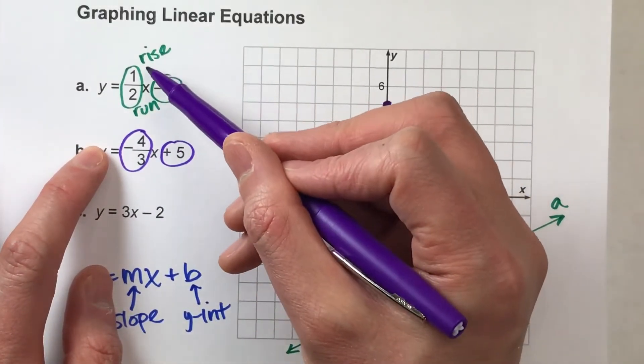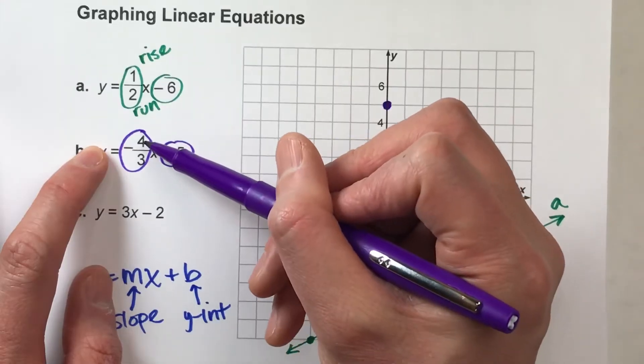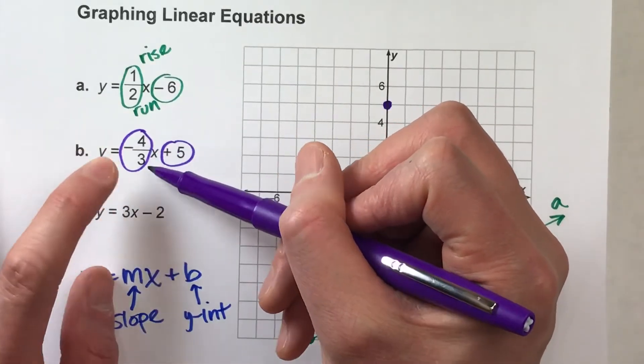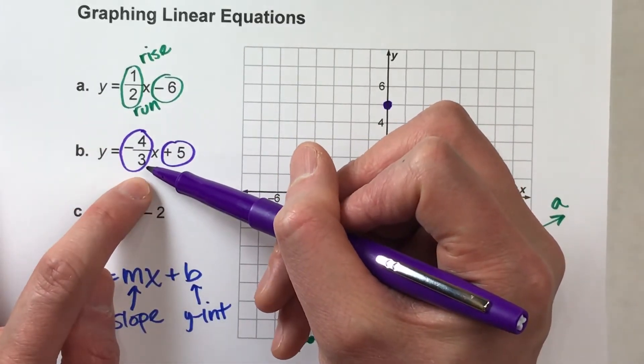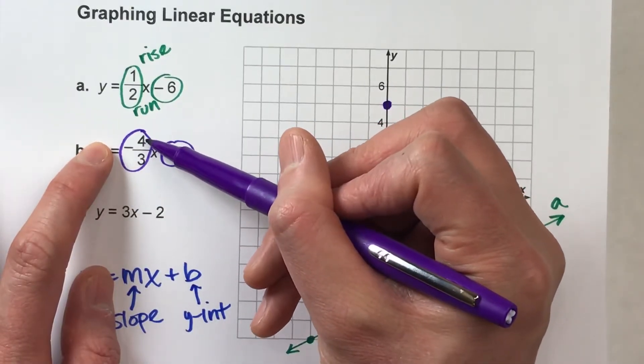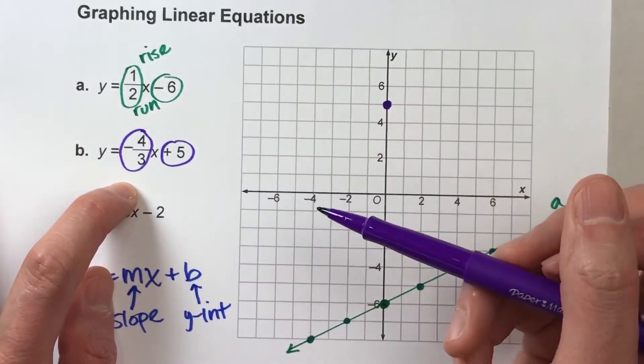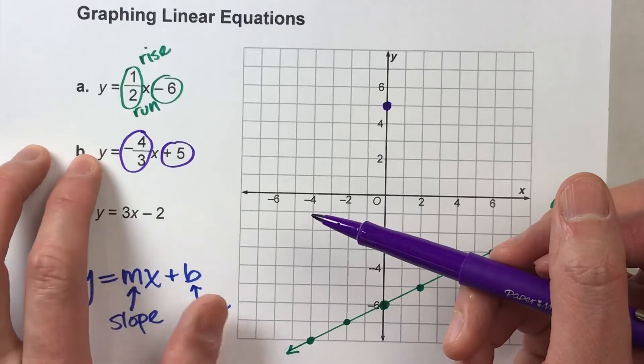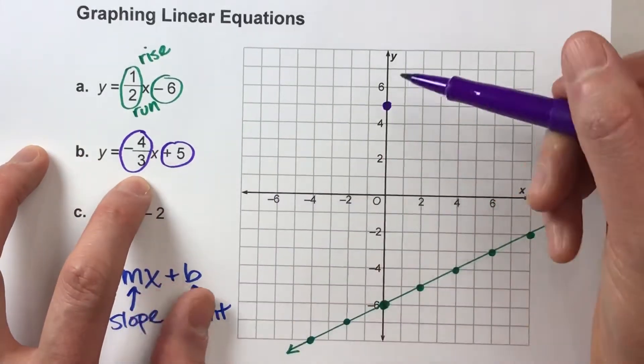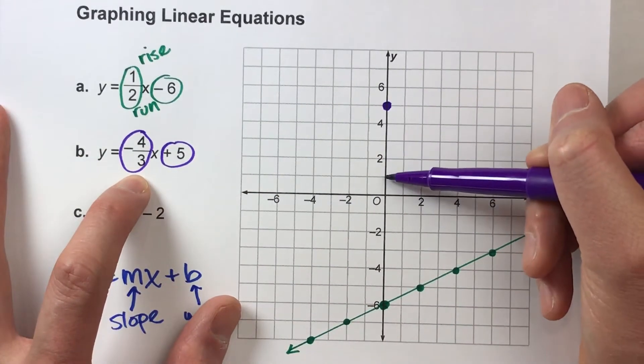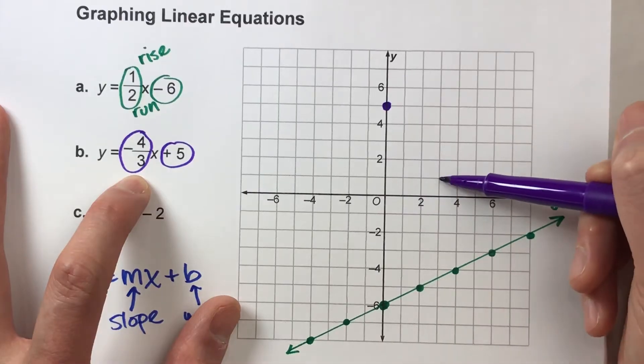Negative means instead of going up for my rise, I'm going to go down for my rise, but I'm still going to go to the right. So this tells me to go down 4, right 3. We always move to the right when we start graphing our line with our slope. So down 4, 1, 2, 3, 4, right 3. 1, 2, 3. There's my point.